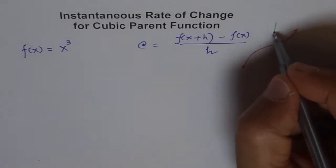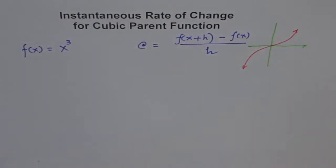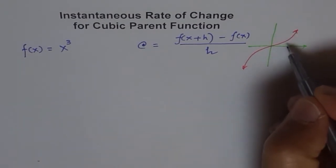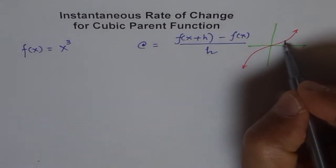When we are trying to find instantaneous rate of change at any given point, we take a point, let's say this is my point. Let's consider this point to be some value of x.